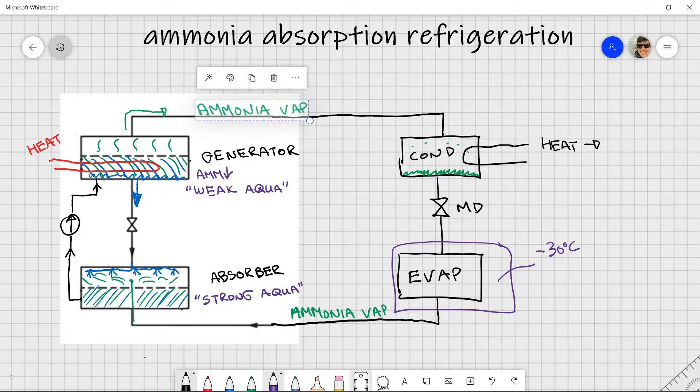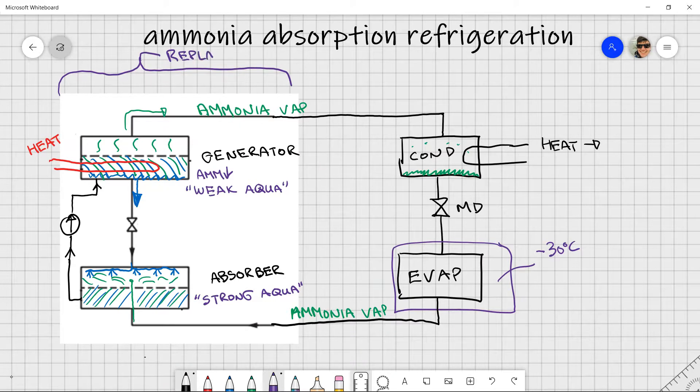The whole goal of this side of my cycle is to replace the compressor with a pump and some heat. So we think of the role of the compressor, it increases the pressure and it increases the temperature. In my cycle here in the absorption refrigeration cycle, what I've done is I have done those two things, increasing the pressure and increasing the temperature, by breaking it out into two different components.